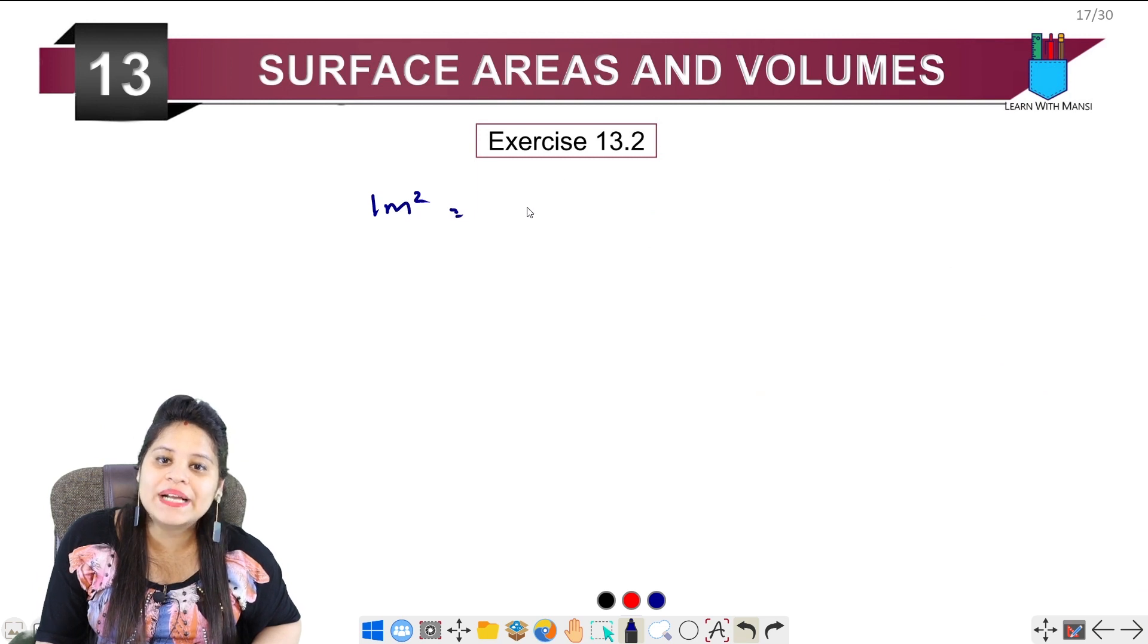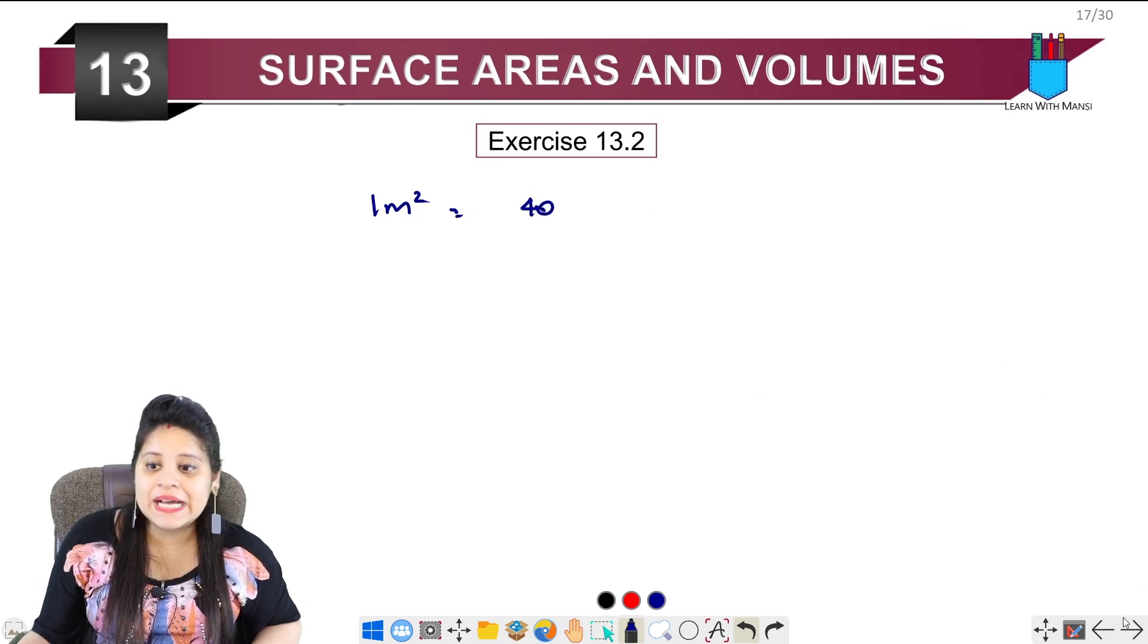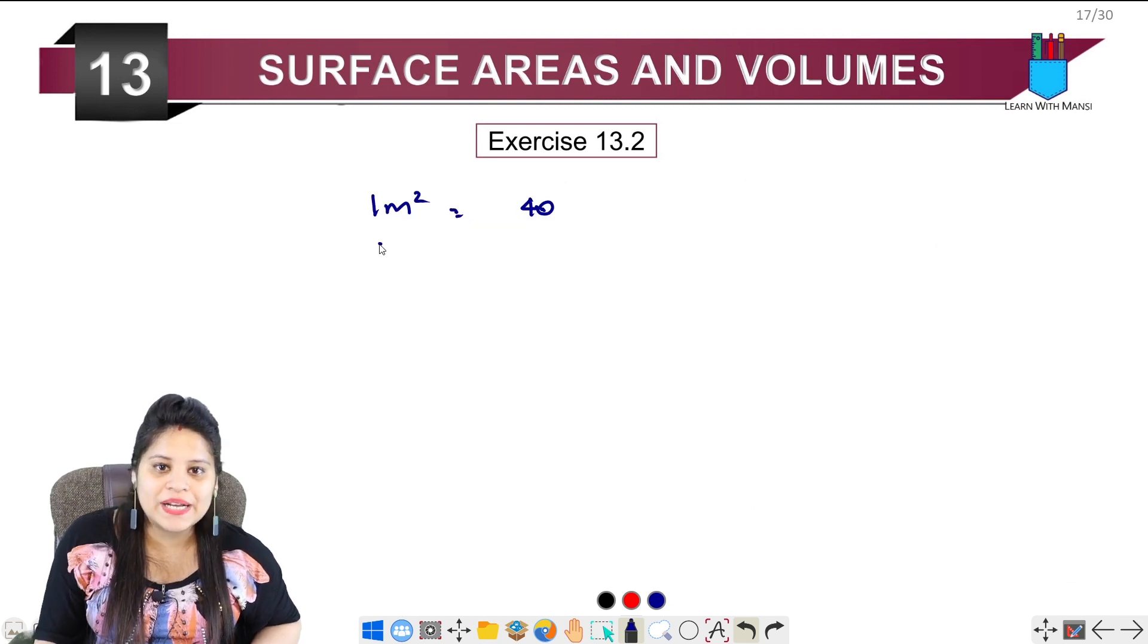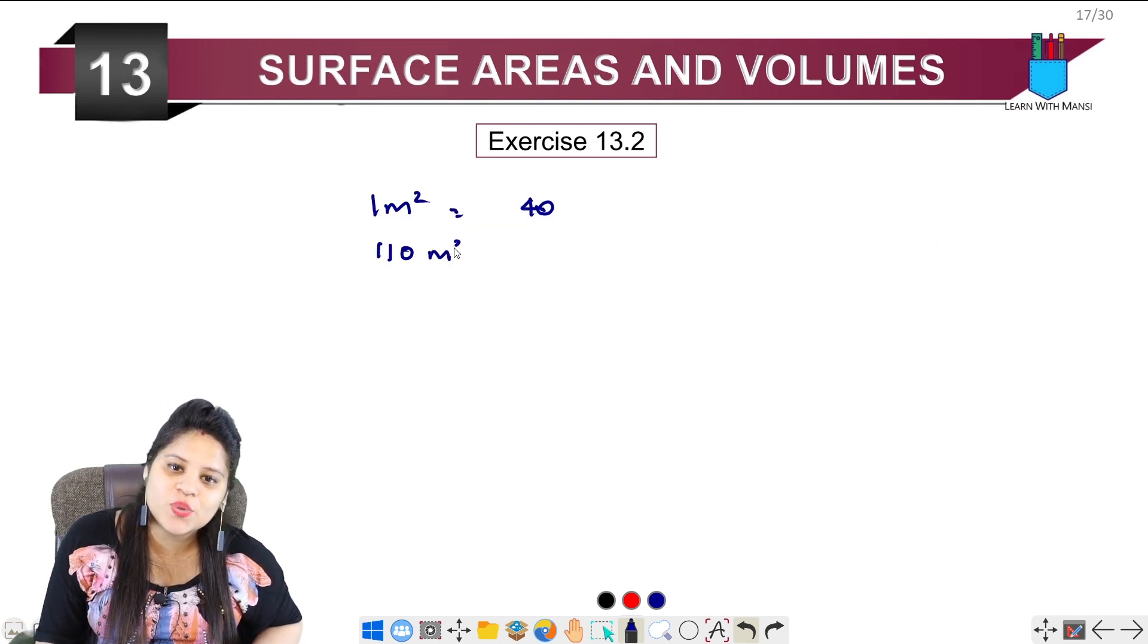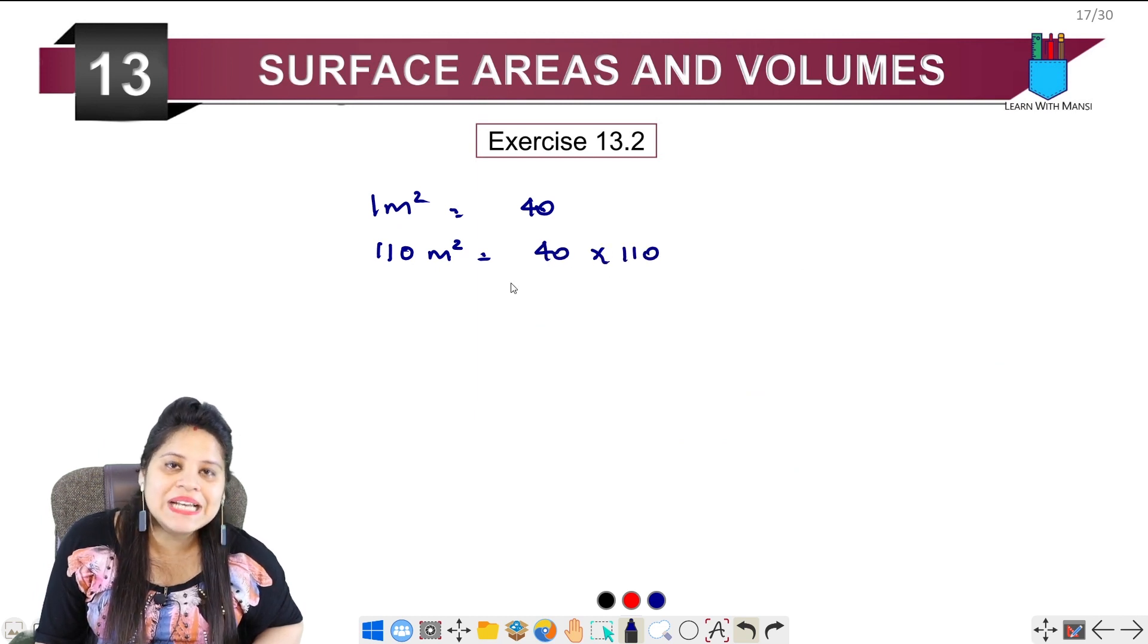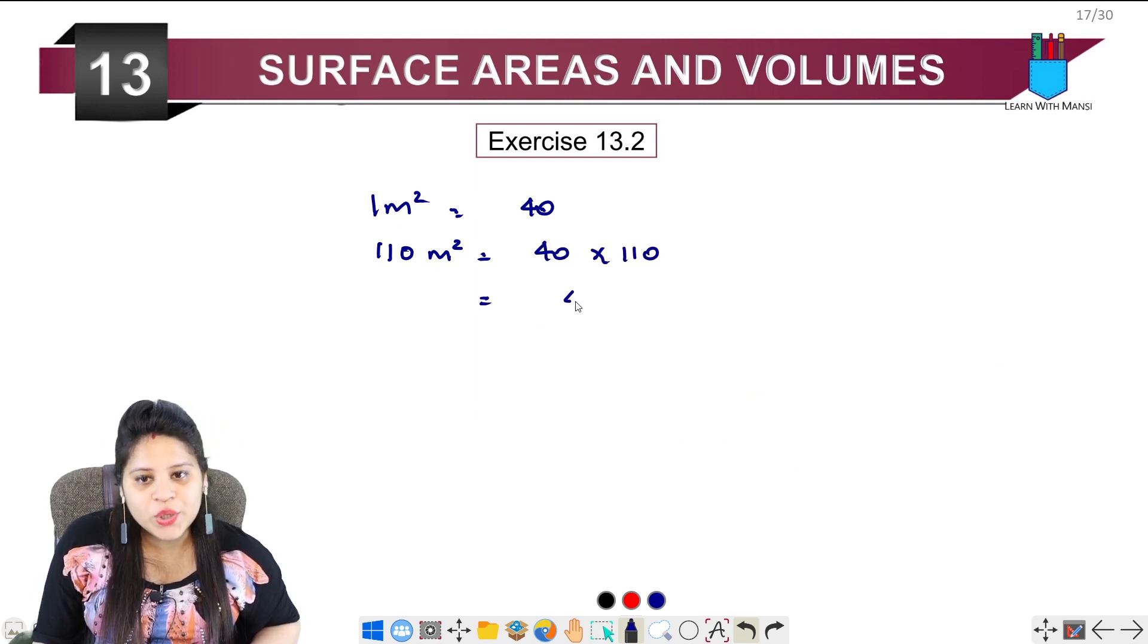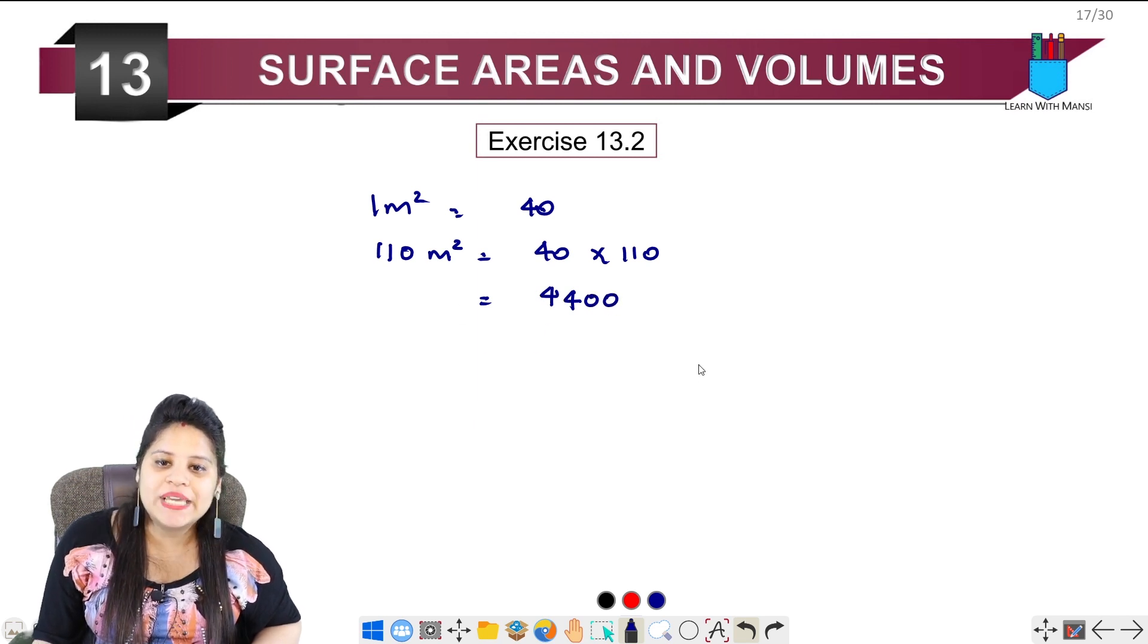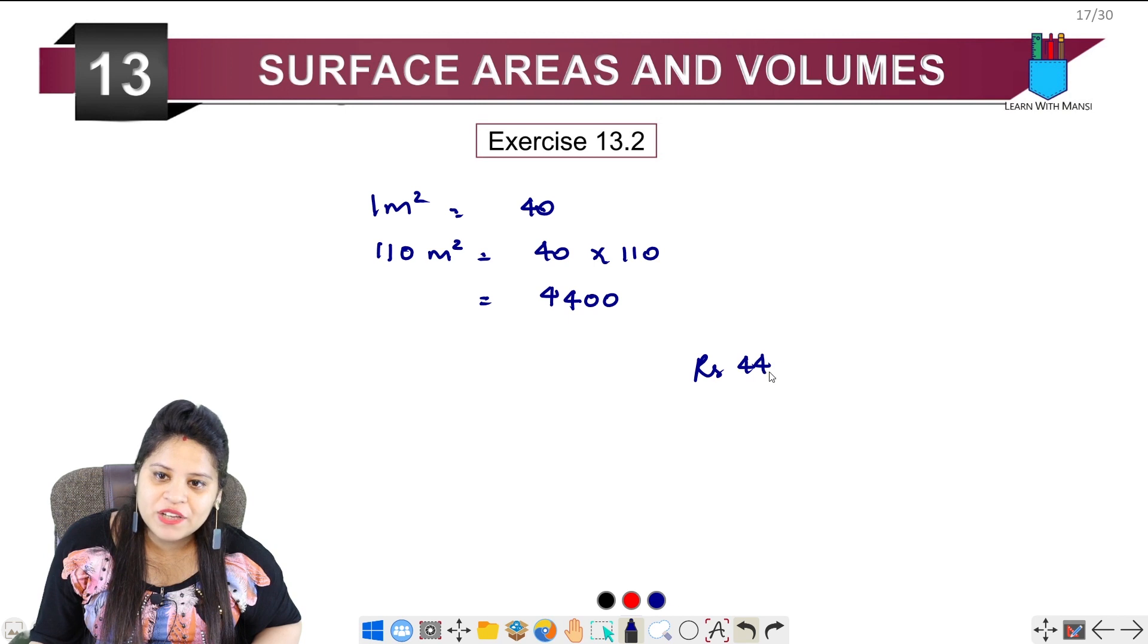This means Rs. 40 for 1 meter square. So the area is 110 meter square. Now 4 into 110 equals 4,400. So the answer is rupees 4,400.